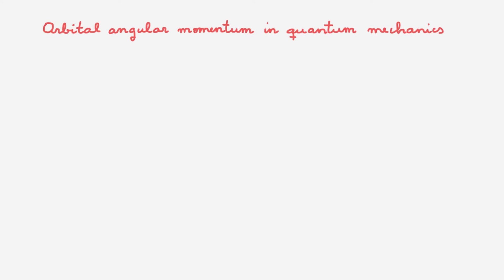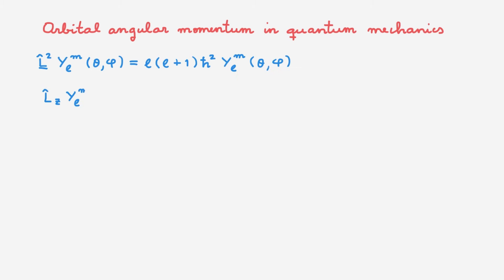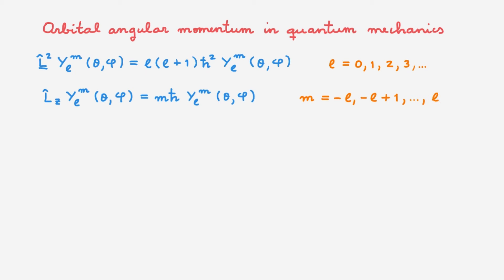The main reason we study spherical harmonics is that they play a central role in the theory of orbital angular momentum in quantum mechanics. This is the eigenvalue equation for the squared angular momentum L², and this is the eigenvalue equation for the z-component of orbital angular momentum Lz. The L² eigenvalues are labeled by quantum number L, which can only take non-negative integer values, and the Lz eigenvalues are labeled by quantum number M, which for a given L can only take values from −L to L. Today's focus is not on the eigenvalues but on the eigenstates shared by L² and Lz — the so-called spherical harmonics.